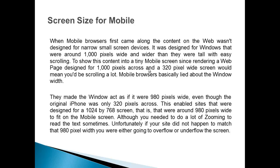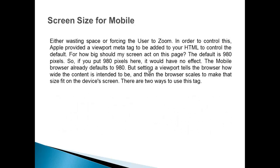Browsers basically lied about the window width — they made the window act as if it were 980 pixels wide, even though the original iPhone was only 320 pixels across. This enabled sites designed for a 1024x768 screen, around 980 pixels wide, to fit on the mobile screen, although you needed to do a lot of zooming to read the text. Unfortunately, if your site did not happen to match that 980 pixel width, you were either going to overflow or underflow the screen, wasting space or forcing the user to zoom.